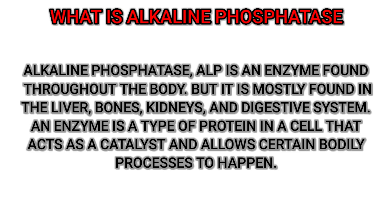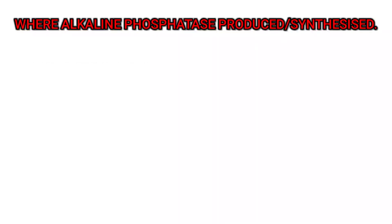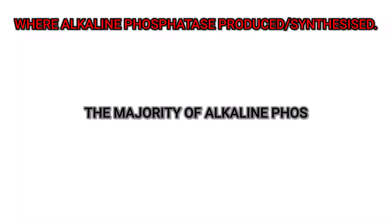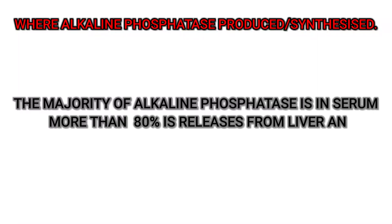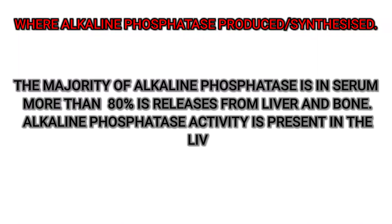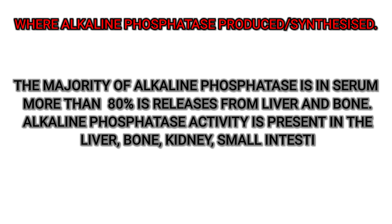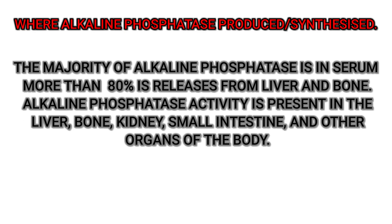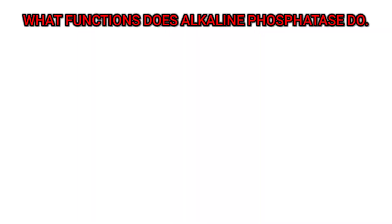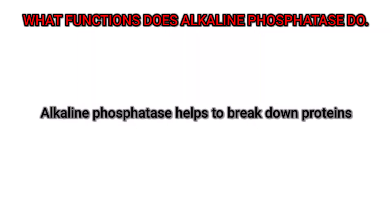Where is alkaline phosphatase produced? The majority of alkaline phosphatase is in serum — more than 80 percent is released from the liver and bone. Alkaline phosphatase activity is present in the liver, bone, kidney, small intestine, and other organs of the body.